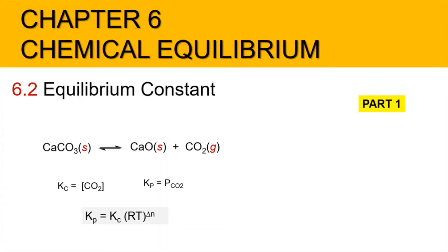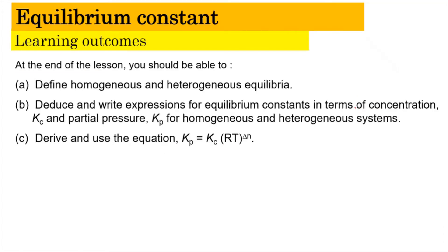Hi, Assalamualaikum and a very good morning. We are now in Chapter 6, Chemical Equilibrium, looking into subtopic 6.2 Equilibrium Constant, Part 1 of the video. In this video, we're going to learn about the definition of homogeneous equilibrium and how to deduce and write the expression for the equilibrium constant in terms of concentration, which is Kc, as well as partial pressure Kp for the homogeneous system.